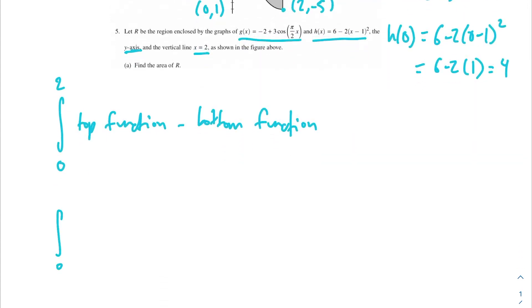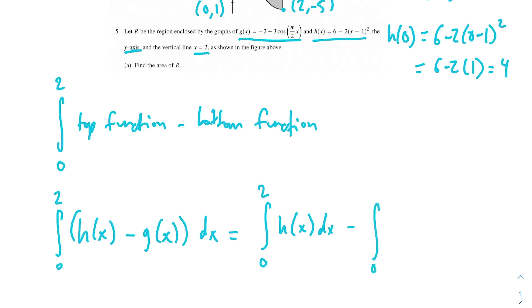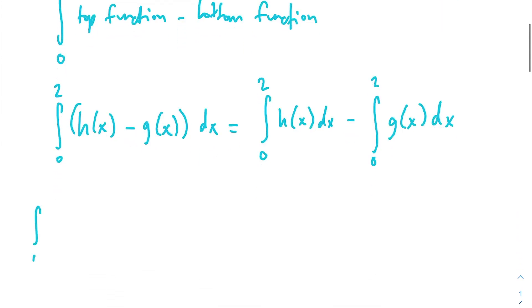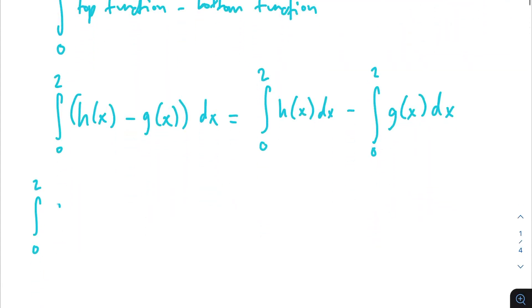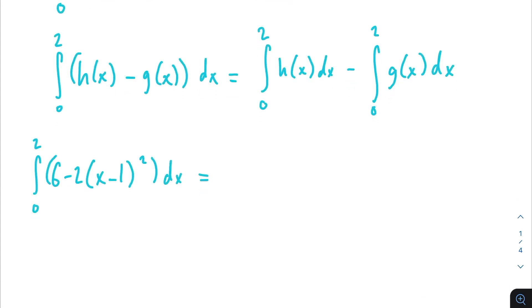So we can go ahead and do the integral from 0 to 2 of h of x minus g of x dx. Since this is a no-calculator problem, we have to solve by hand. I prefer splitting them into two separate integrals so the work stays clean. For the first one — the integral from 0 to 2 of h of x, where h of x is 6 minus 2(x minus 1) squared — since the derivative of (x minus 1) is just 1, we can use the power rule directly without u-substitution.